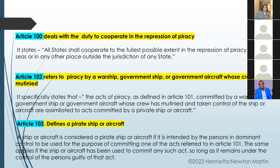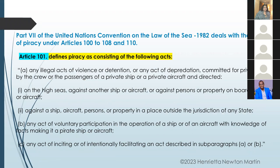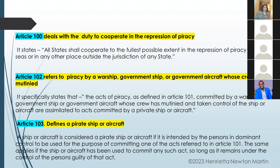Article 103 defines a pirate ship or aircraft. A ship or aircraft is considered a pirate ship or aircraft if it is intended by the persons in dominant control to be used for the purpose of committing one of the acts referred to in Article 101 — namely, any illegal act of violence, detention, or depredation committed for private ends, or voluntary participation in the operation of a ship or aircraft with knowledge of facts making it a pirate vessel. The same applies if the ship or aircraft has been used to commit any such act, so long as it remains under the control of the persons guilty of that act.